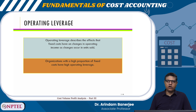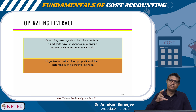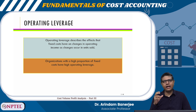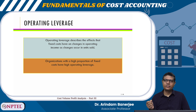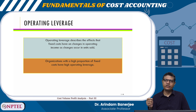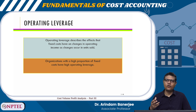Organizations with a high proportion of fixed costs have high operating leverage. If the fixed cost proportion is high in the cost structure, the operating leverage will also be high. Because when production goes up, the per-unit fixed cost gets reduced, and because of that, profitability increases manifold. This phenomenon is called operating leverage.